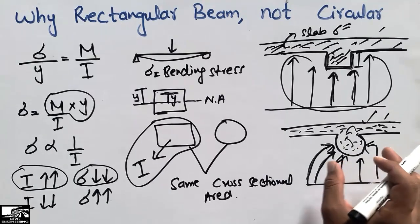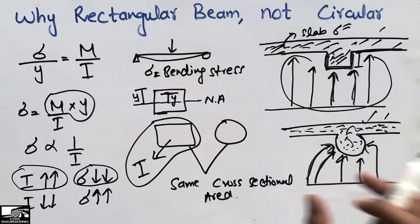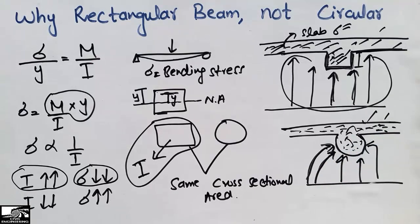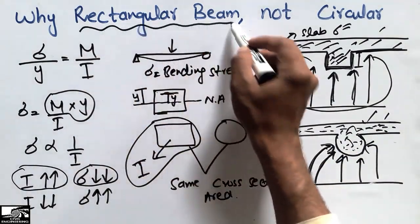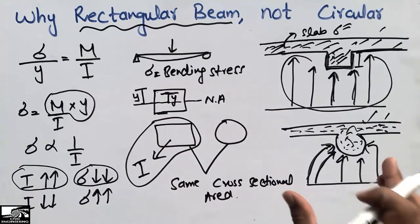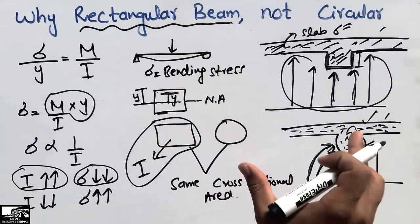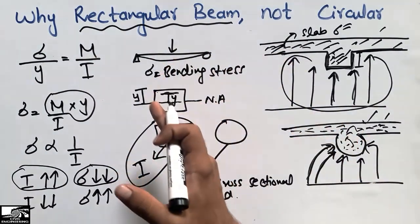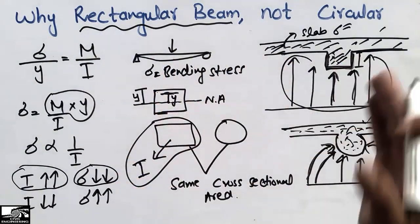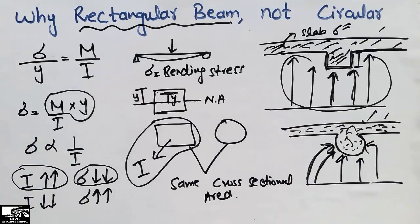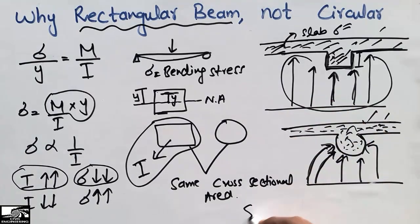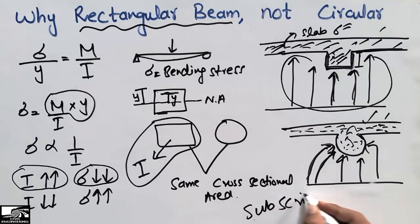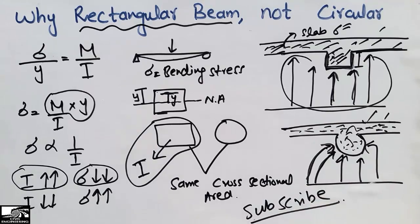Due to the difficulty of circular formwork availability, we don't go for circular beam designs — we design rectangular beams instead. That was today's lecture. I hope you guys understand the two reasons why we use rectangular beams and not circular beams in our designs. Don't forget to subscribe to the channel for daily engineering videos. Thank you for watching.